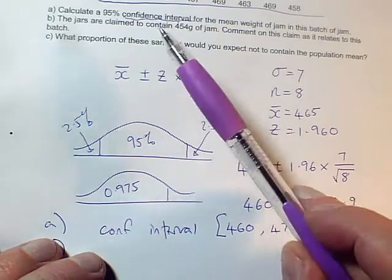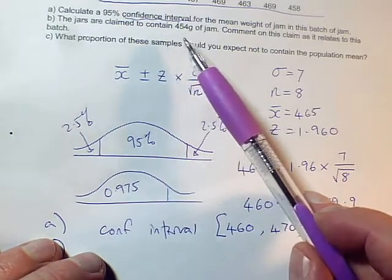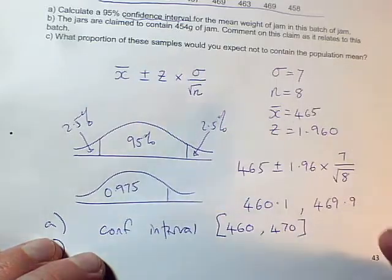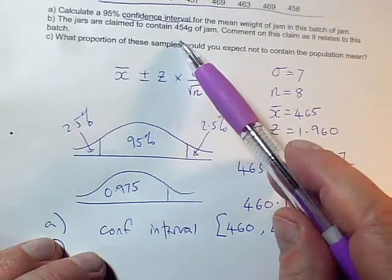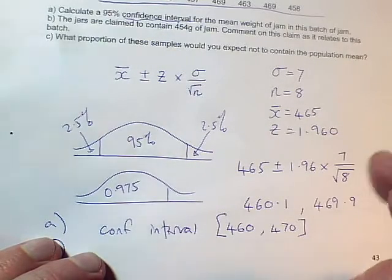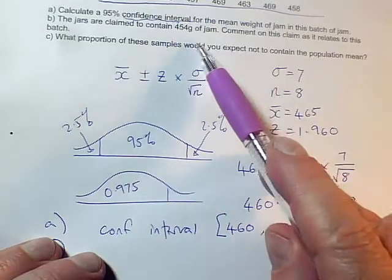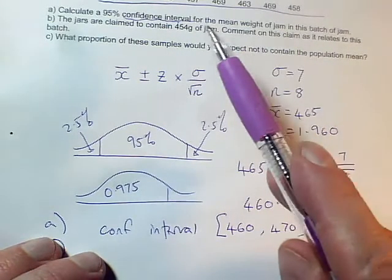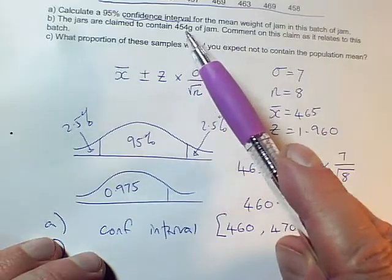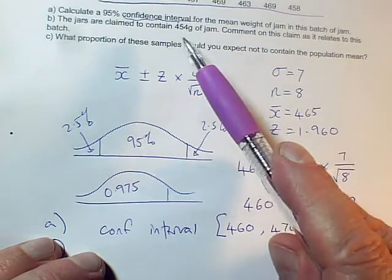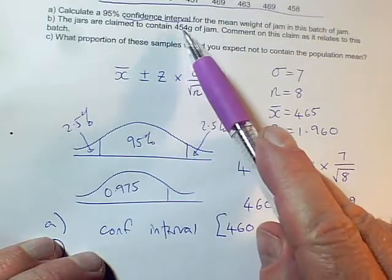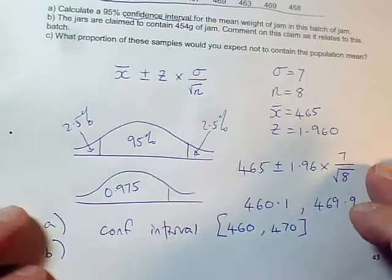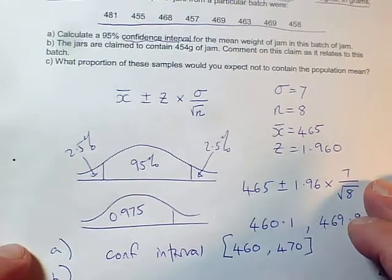Now in part B, there's a claim that the jars contain 454 grams of jam. This kind of only makes sense if they're talking about at least 454 grams of jam. Now this claim, and often you have to take it this way, you have to consider two things. Do they mean that all jars in the sample, all jars in the population have at least this weight of jam in them? And for that one, even looking at the sample data...